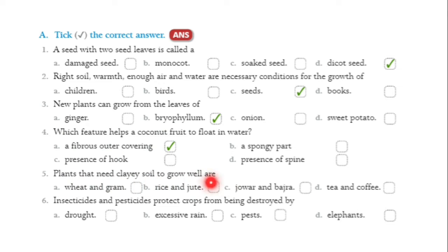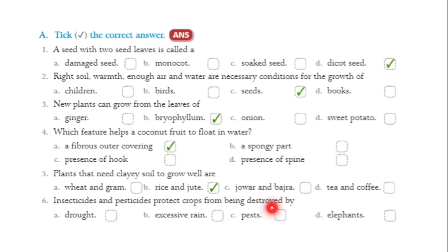Next question: plants that need clayey soil to grow well are — wheat and gram, rice and jute, jowar and bajra, or tea and coffee? The correct answer is rice and jute. Insecticides and pesticides protect crops from being destroyed by — drought, excessive rain, pests, or elephants? The correct answer is pests.